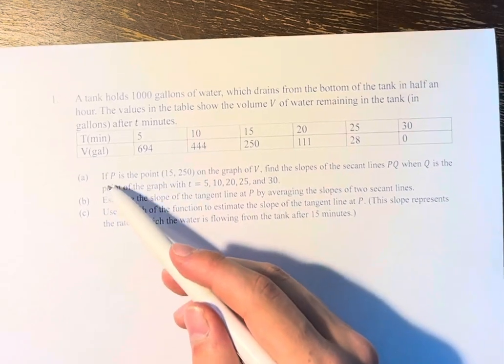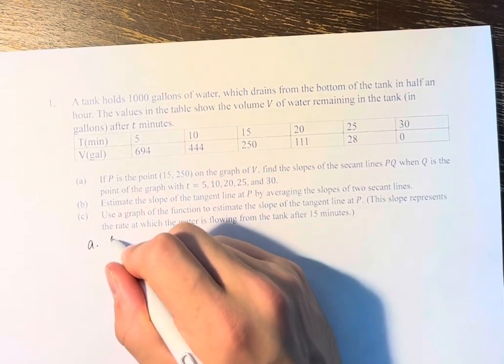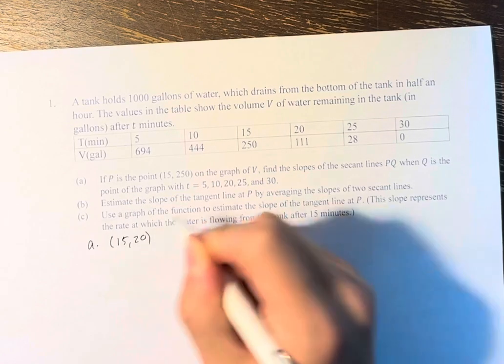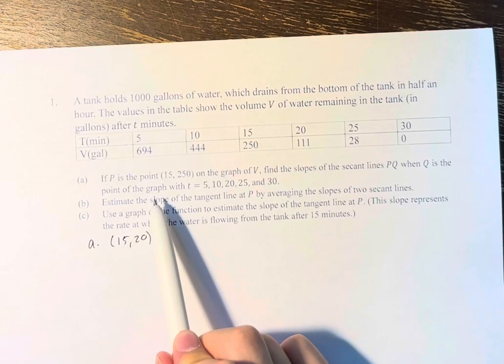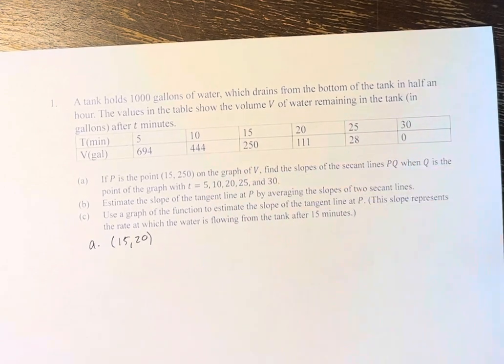We're asked if P is the point 15, 250 on the graph of V, find the slopes of the secant lines PQ when Q is the point of the graph with T equals 5, 10, 20, 25, and 30.